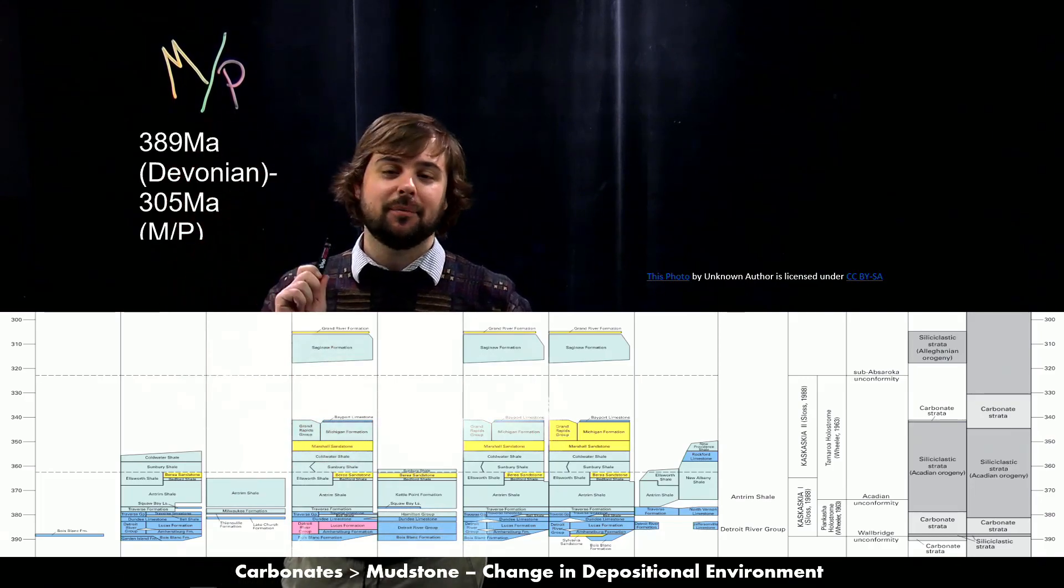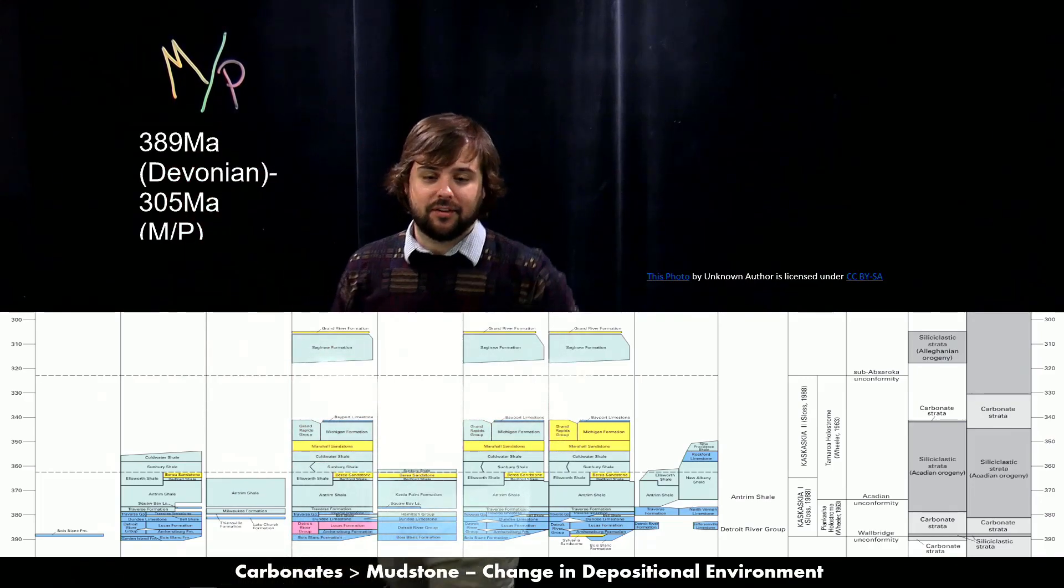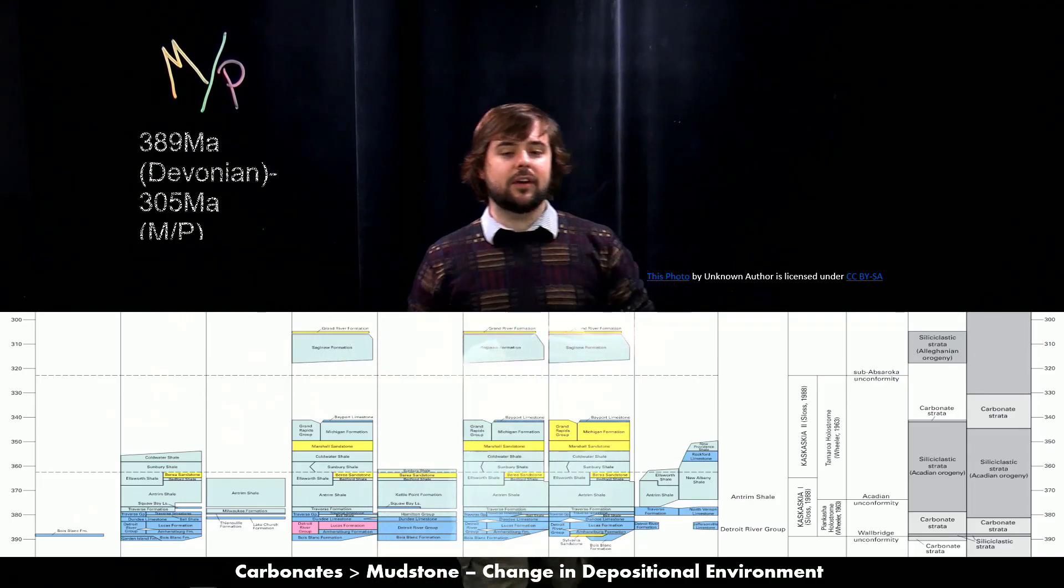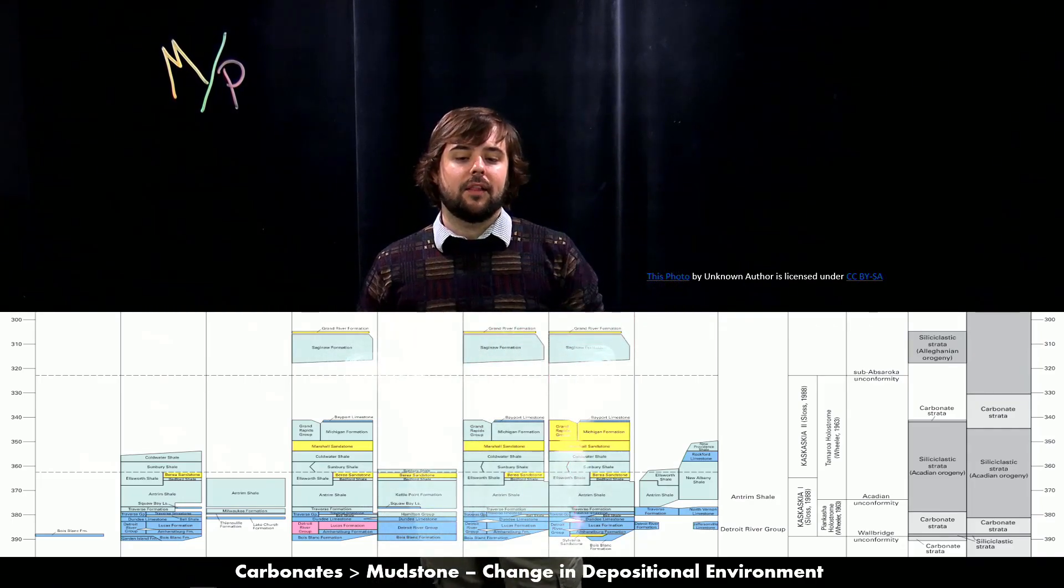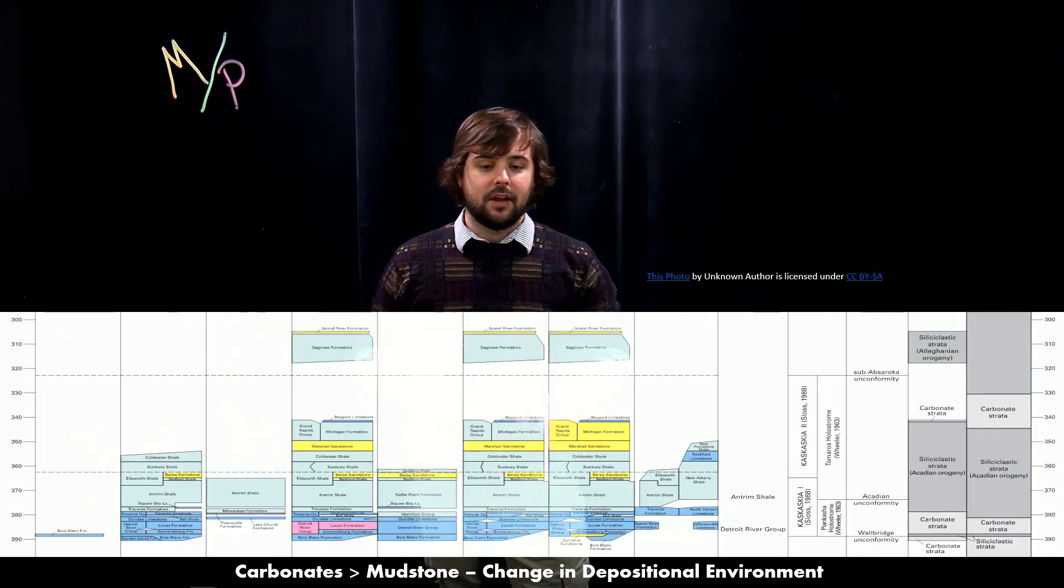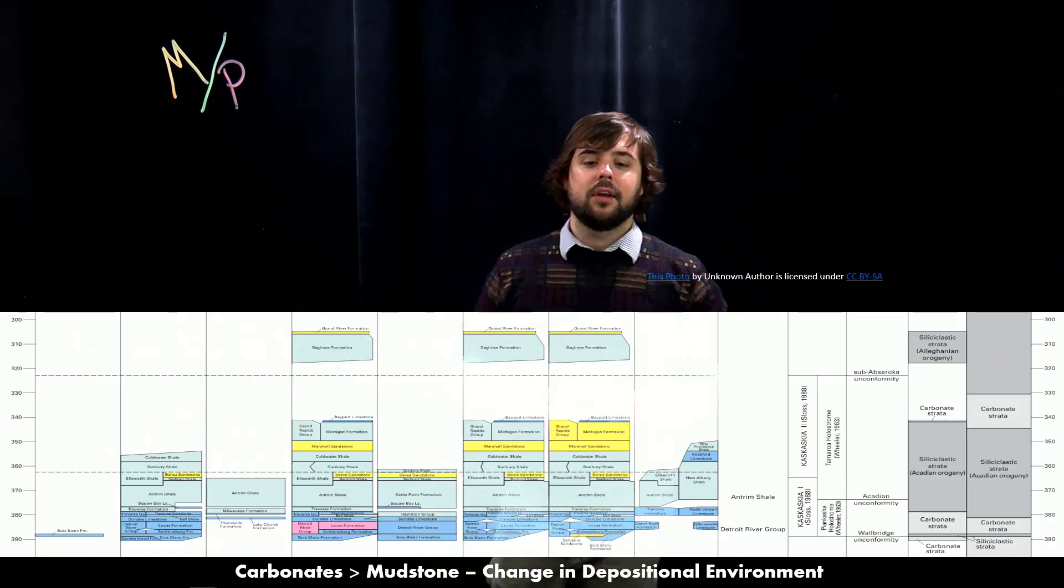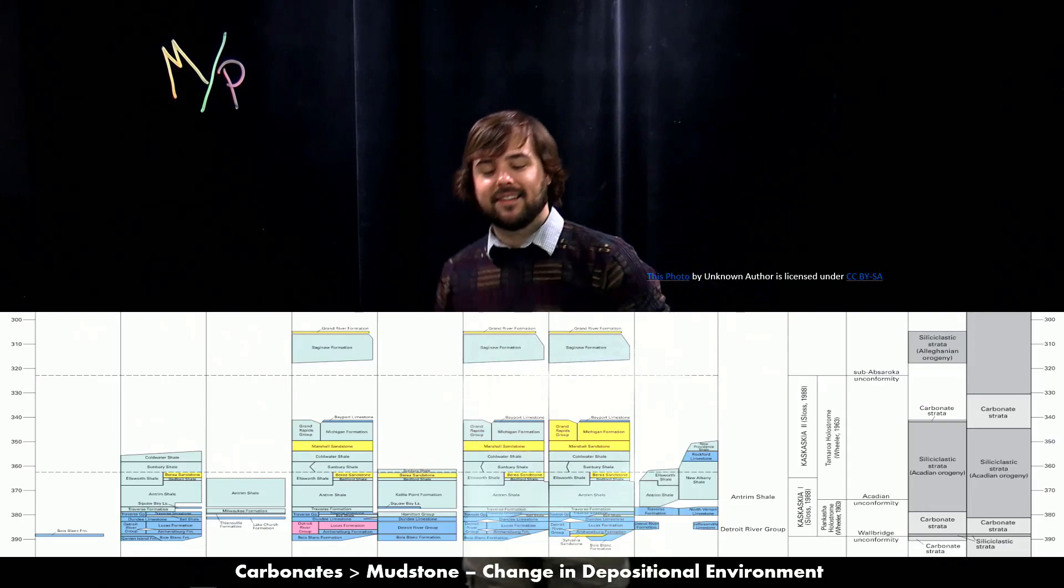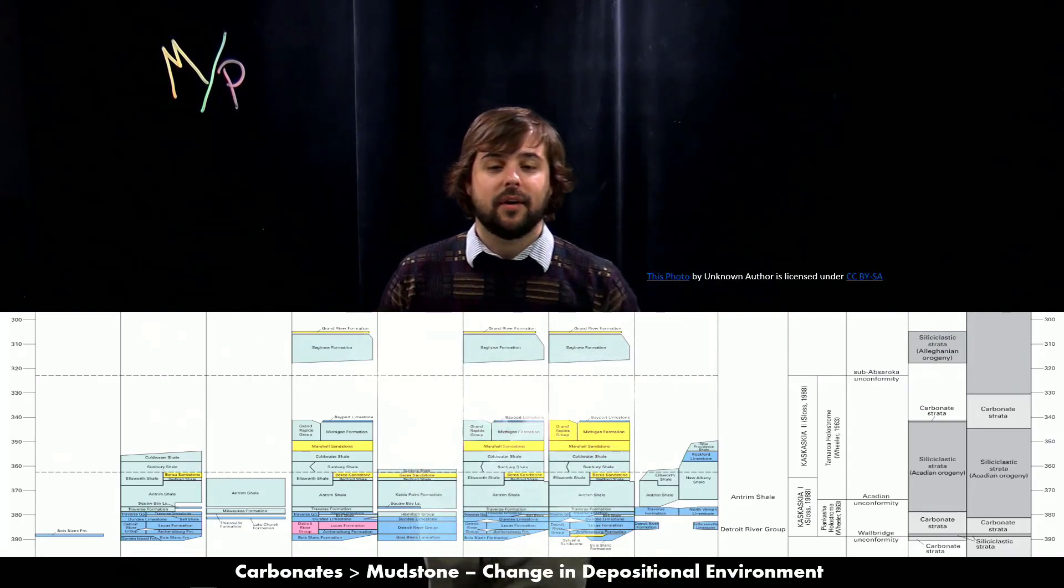For our next stop, we have the Mississippian and Pennsylvanian. Okay, so talking about these rocks, as you can see, they look a little bit different. In the color key here, they describe the blue rocks as carbonates, these grayish green rocks as mudstone, yellow rocks as sandstones, and the pink ones are evaporates.